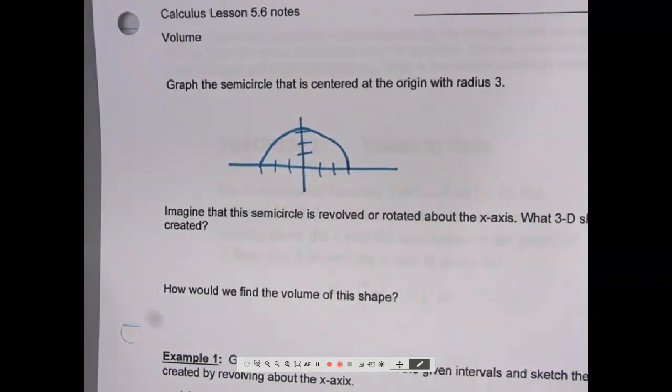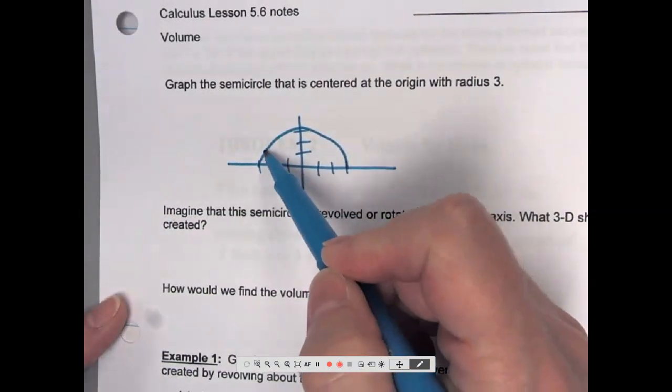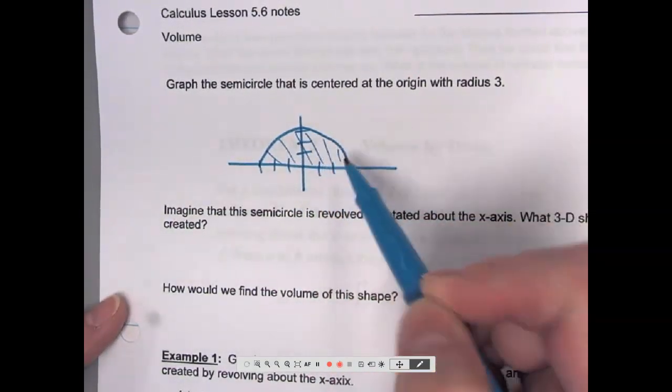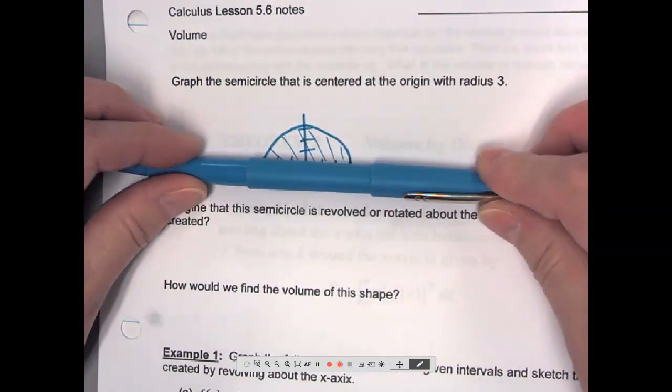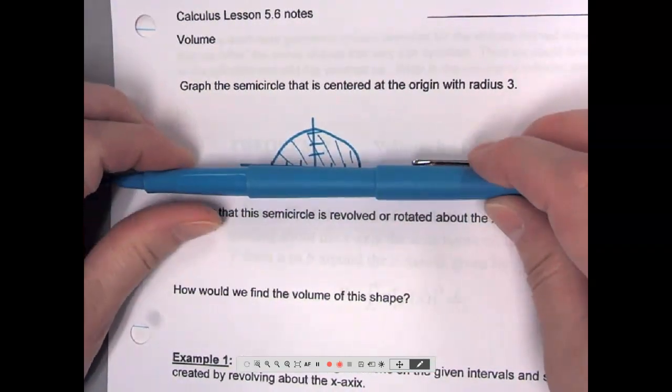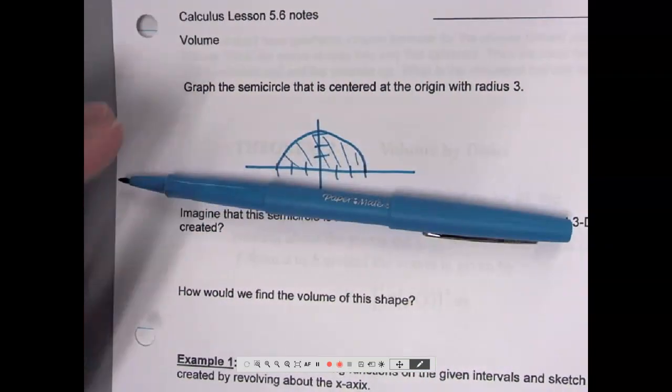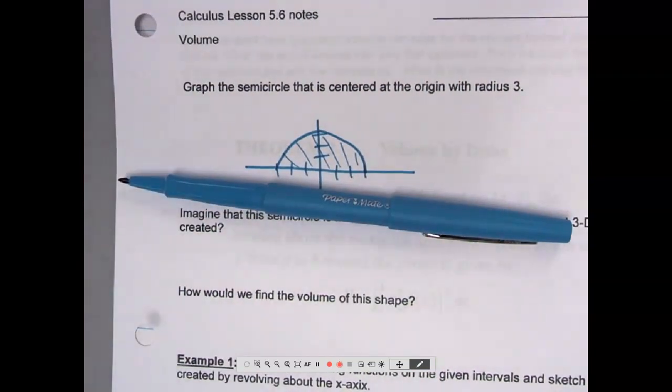Imagine that this semicircle is revolved or rotated about the x-axis. What 3D shape is created? If I take this semicircle, picture that it's a flap of paper attached to this axis, and I rotate the axis so that that little semicircle is rotating through space. Which shape is formed? A sphere.